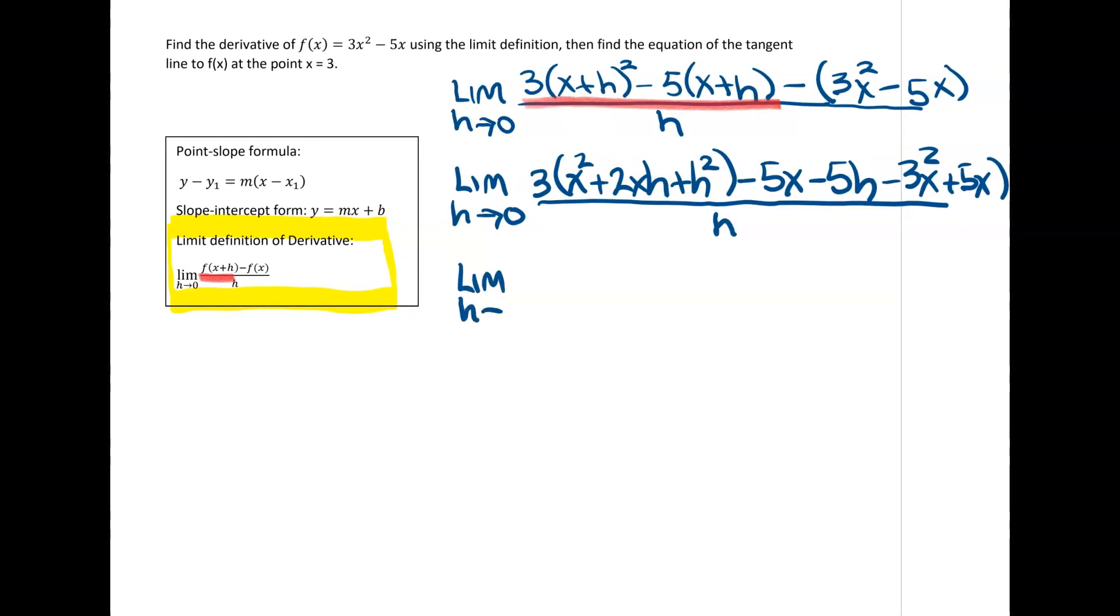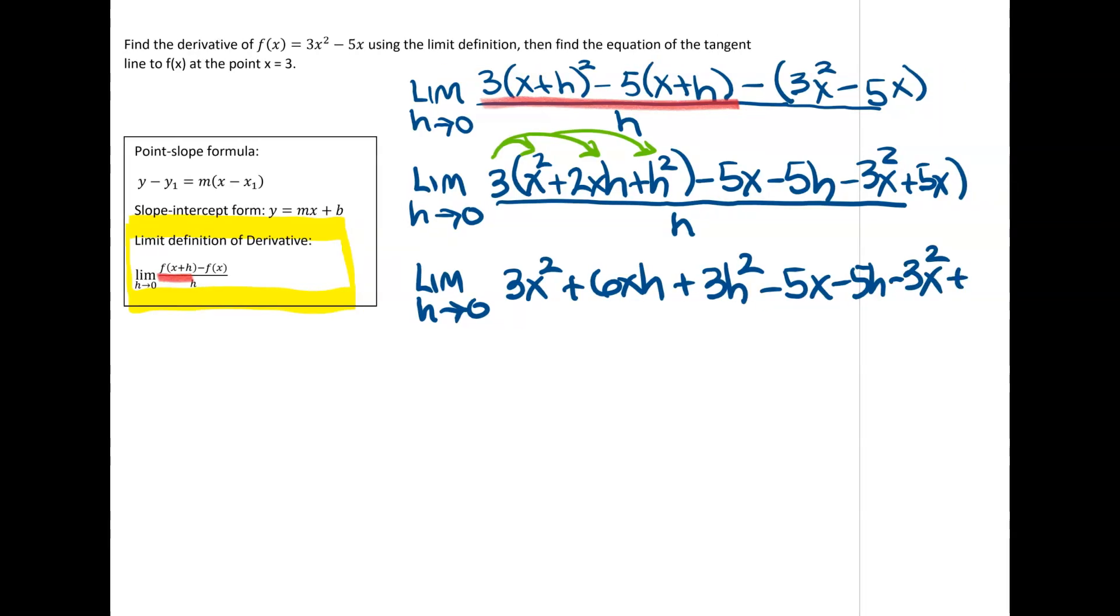So 3x squared, 6xh plus 3h squared. So again, that is this 3 distributing into here. All right, minus 5x minus 5h minus 3x squared and then plus 5x. All that divided by h.